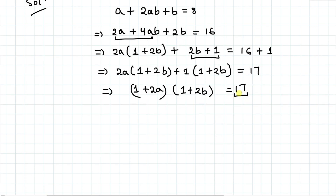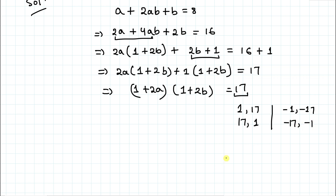Here you can see that 17 is a prime number, meaning the factors of 17 must be 1 and 17 itself. So in order to satisfy the equation, the values of 1 plus 2a and 1 plus 2b can be either 1 and 17, or 17 and 1, or minus 1 and minus 17, or minus 17 and minus 1. Let's find the values of a and b for each case.